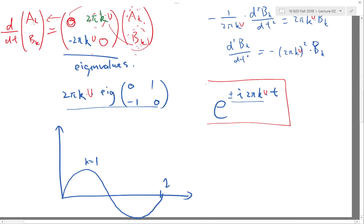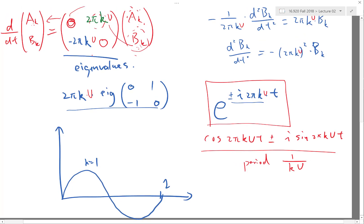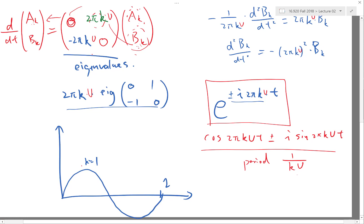If K is equal to 1, if you look at this function, or let me just write it as cosine of 2πKut plus or minus i times sine of 2πKut. What's the period in time of this function? It's 1 over Ku, because when t is equal to 1 over Ku, we have cosine of 2π. So that means for K equal to 1, I have a period of 1 over u.